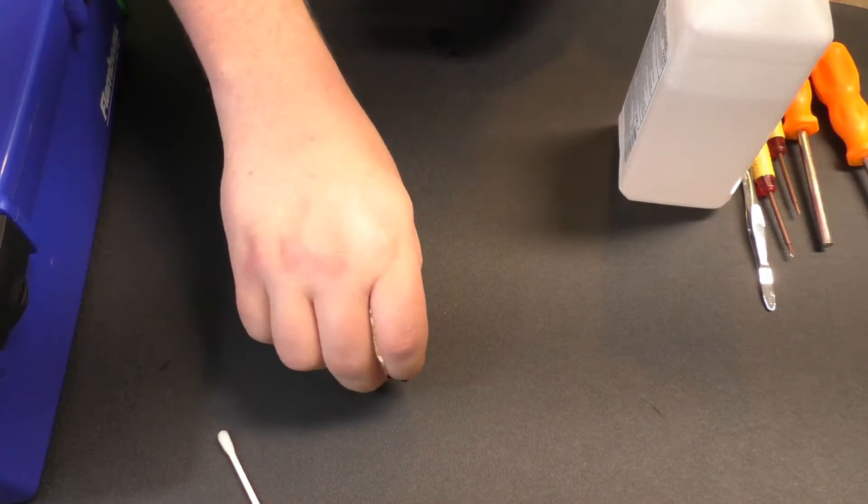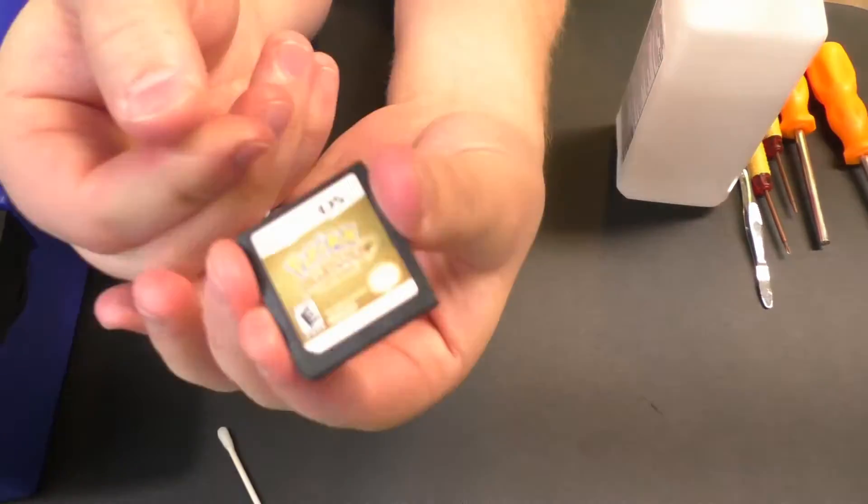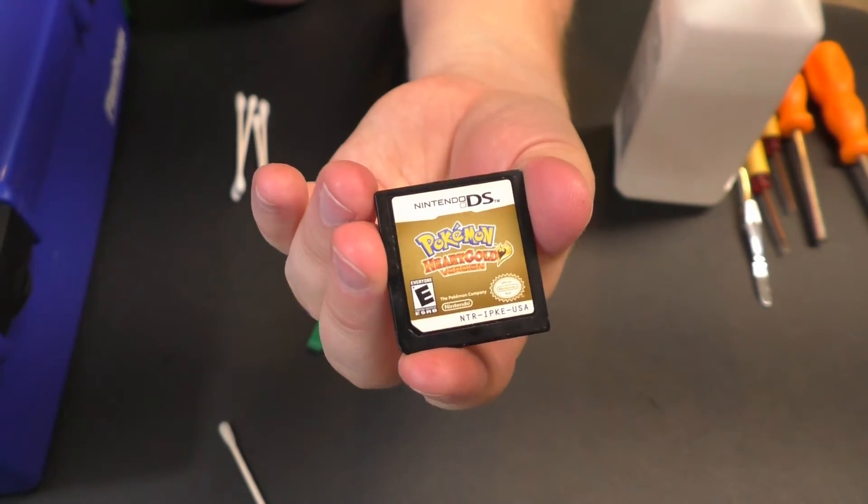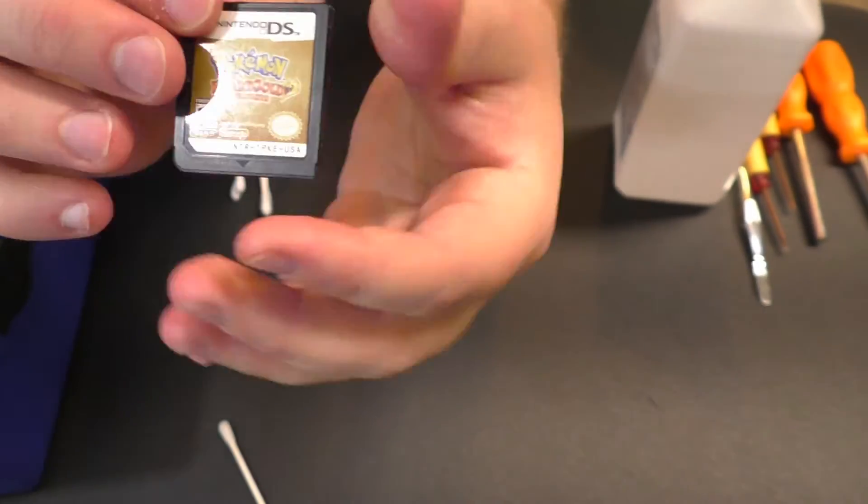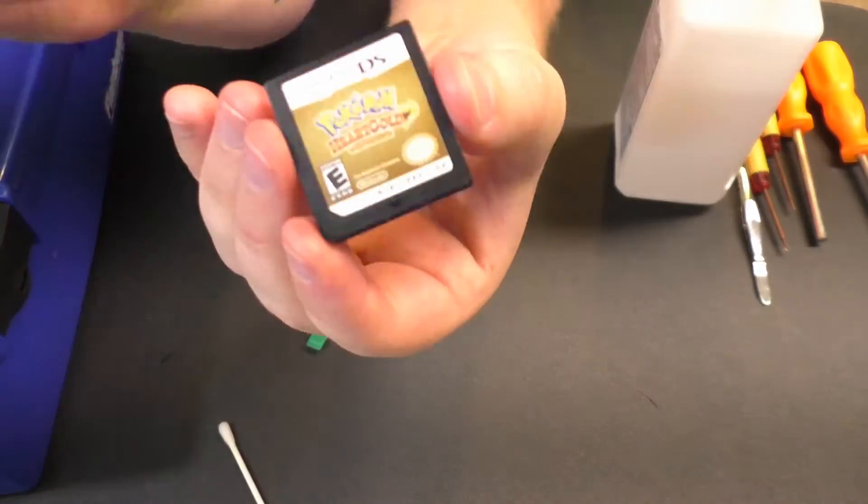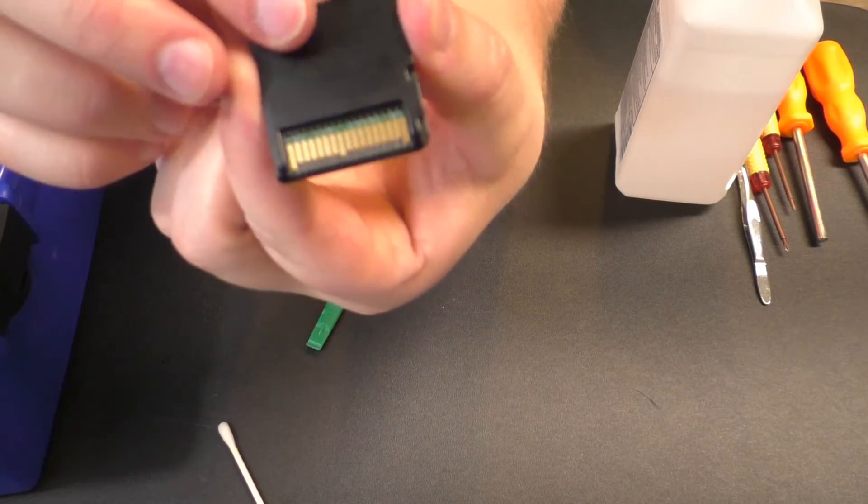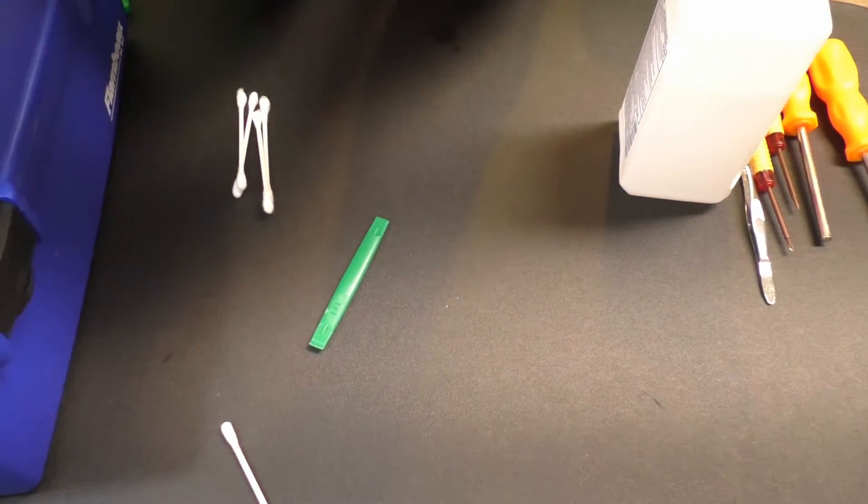Grab our case. On these older ones, a little bit of glue might help put the case back together, but it usually just needs a good little snap and you're ready to roll. And now the pins are bright and shiny.